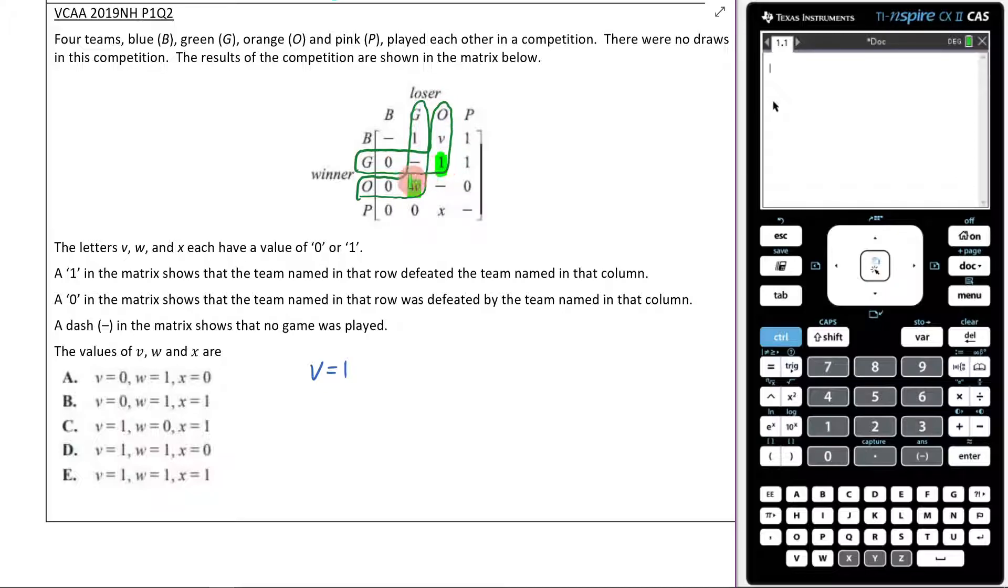G beat O. That means O lost, right? So was O a winner? No, it was not. W is 0. So we can come over here, and we can say that W is equal to 0. Then we go to the next one.